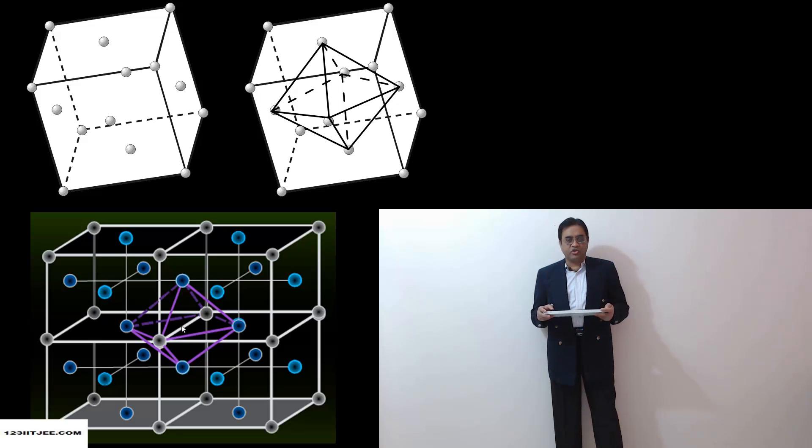Since there are twelve edges in a unit cell, there are going to be twelve such octahedral voids.